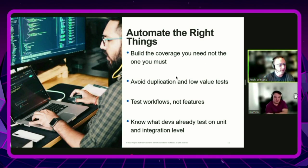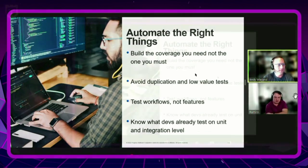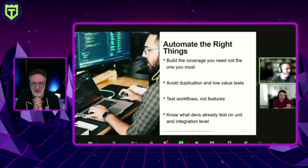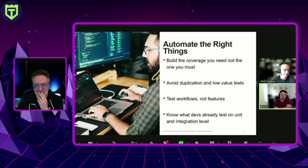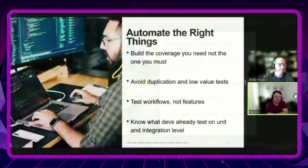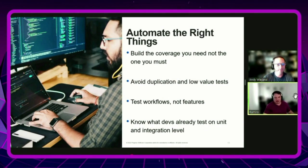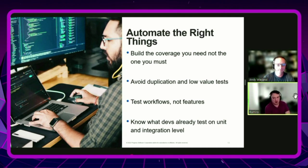Looking at test workflows versus features — this is where you can really optimize and start to get a good level of test coverage. You're not going to get 100%, but whatever acceptable percentage you land on, testing workflows is far better than testing features. Features will adapt, change, and contain defects. If you're just testing the feature, you might miss issues. A workflow test will catch any potential defect introduced into the ecosystem.